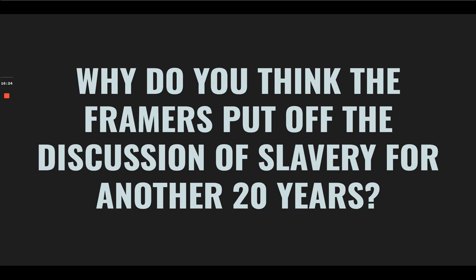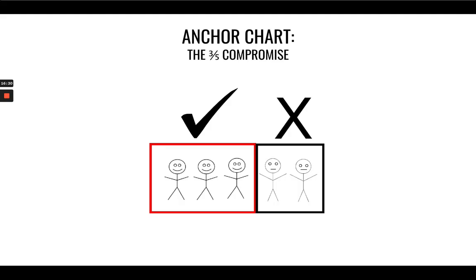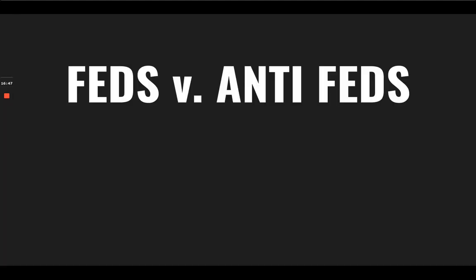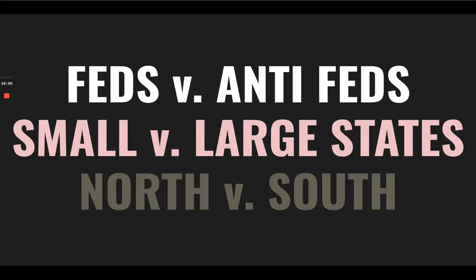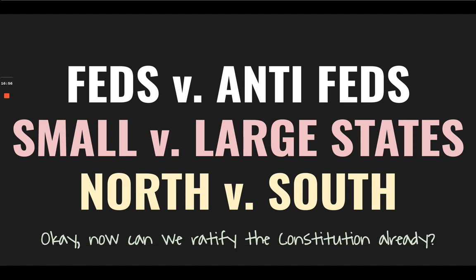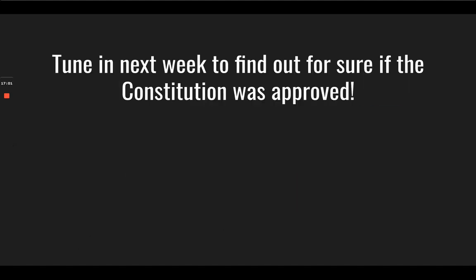Why do you think the framers put off the discussion of slavery for another 20 years? Your anchor chart for the Three-Fifths Compromise: out of every five slaves, three would count for population, and they were counted for both taxation and representation purposes. Feds versus Anti-Feds, small versus large states, North versus South — can we ratify the Constitution already? Tune in next week to find out if the Constitution was approved. Thank you.